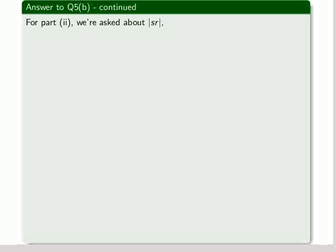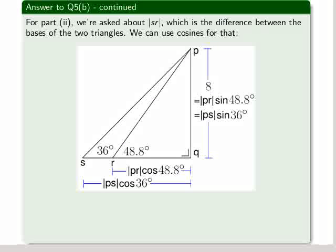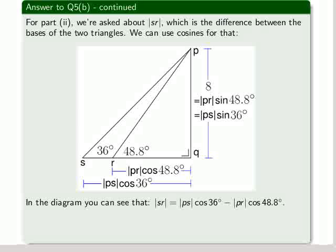Now part 2, we're asked about SR, which is the difference between the bases of the two triangles. We can use cosines for that. Here's that diagram once again. We can see SR is the small segment on the base.